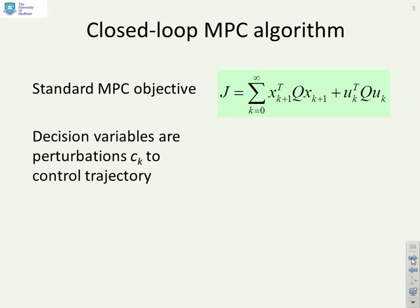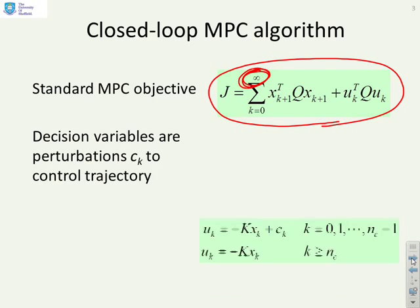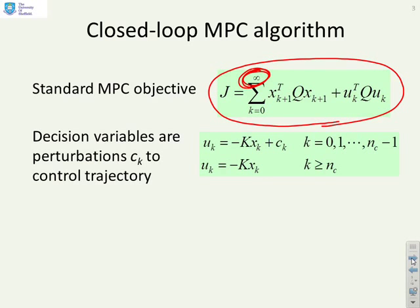First, a quick reminder of the dual-mode algorithm. We tended to deploy a performance index a bit like this. And the critical thing you'll see is we had an infinite horizon. We expressed the degrees of freedom as these perturbations to an underlying control law. But we only allowed ourselves perturbations over a finite horizon. And then resorted back to a simple control law over the infinite horizon.